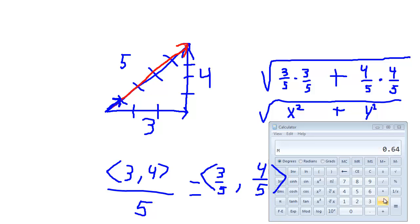Do you remember what we had in memory before? Three divided by five times three divided by five was point three six. Point three six plus point six four is one. And the square root of one is one.